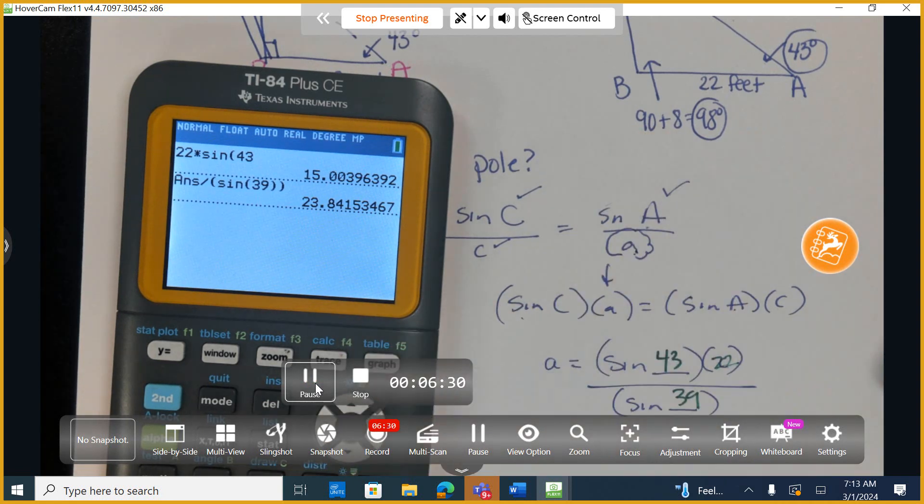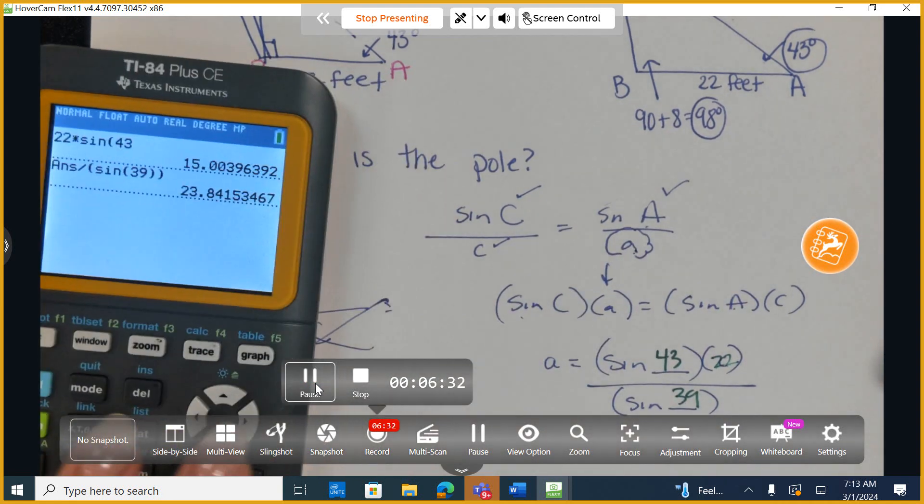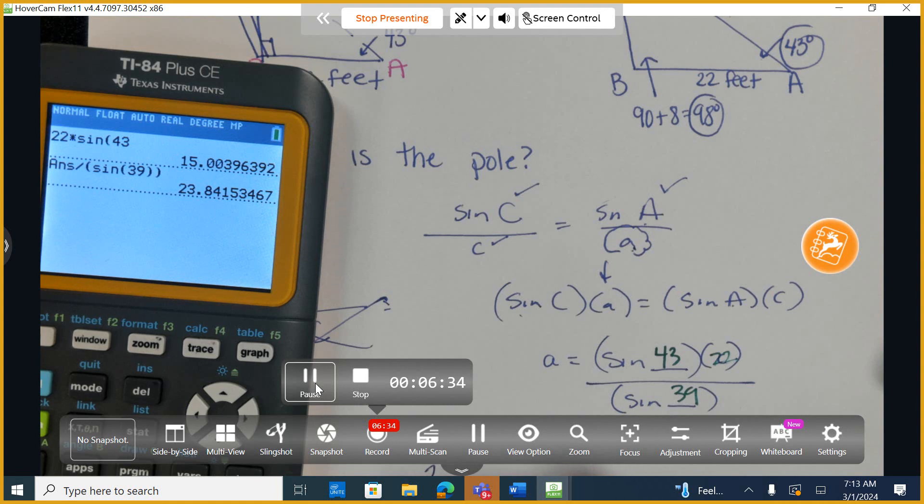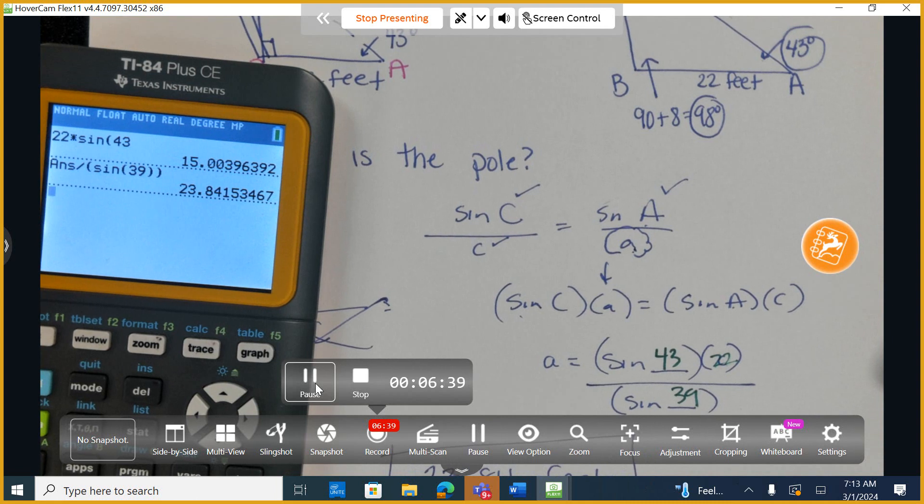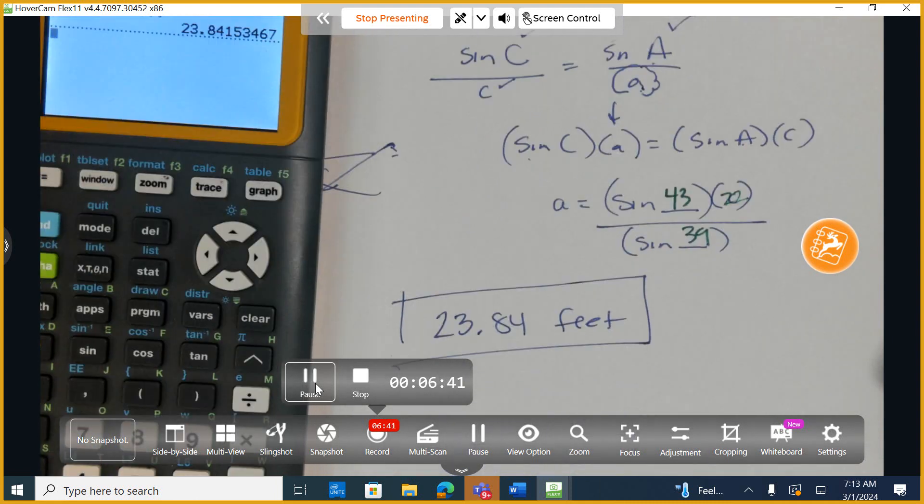When we label this, we're talking in terms of feet. This is a length. So I'm going to round. They should tell us what we need to round to. But I'm going to say 23.84 feet. This is the length of the pole.